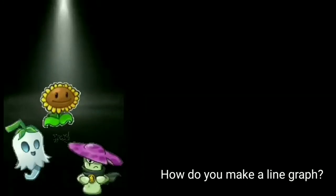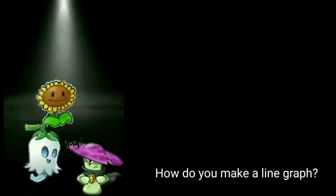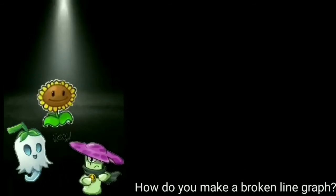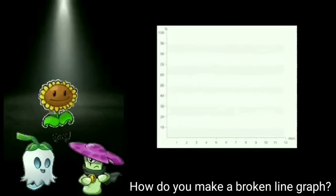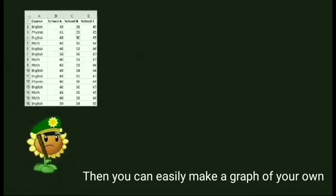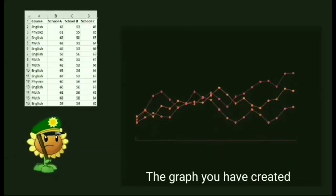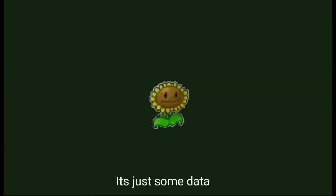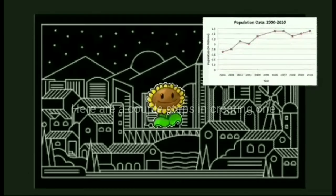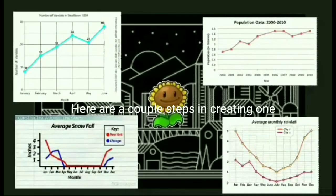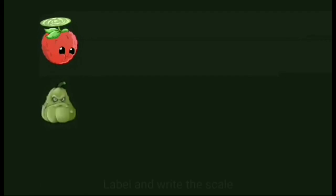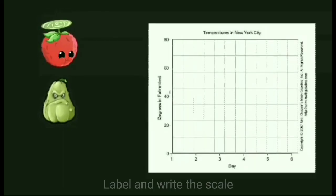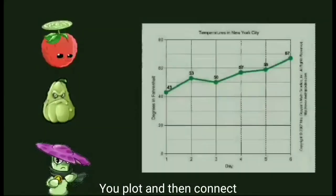How do you make a broken line graph? If you know how to type in your data, you can easily make a graph. And then interpret the graph you have created. Here are a couple steps in creating one: Create the two axes. Label and write the scale. You plot and then connect. That's how you make a broken line graph.